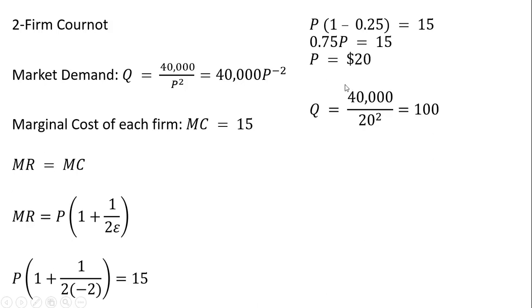And to get the equilibrium quantity, we're going to plug this 20 into the market demand, and we get an equilibrium quantity of 100. Each firm produces 50 units of output, so each firm splits the market output. Each firm has the same marginal cost, and that is our answer.